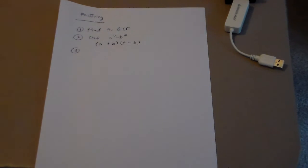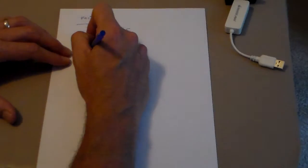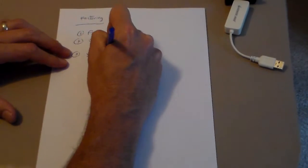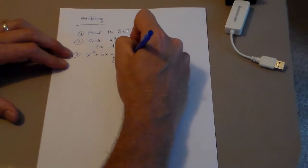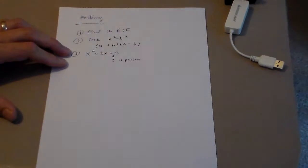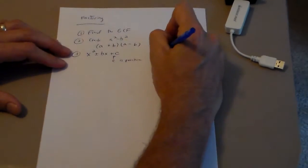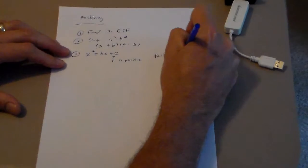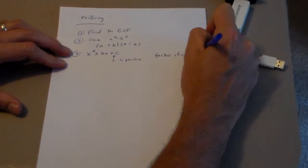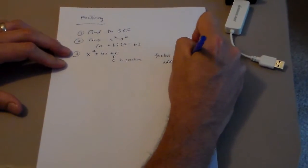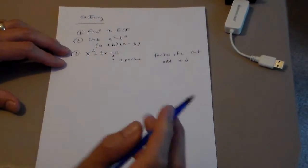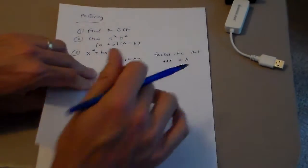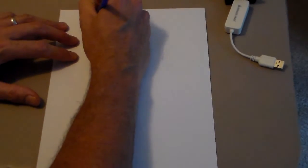Step three covers trinomials of the form x squared plus or minus bx plus c, where c is positive. When that's the case, we're looking for factors of c that add to b — factors of your last term that add to the middle term. Let's look at an example.